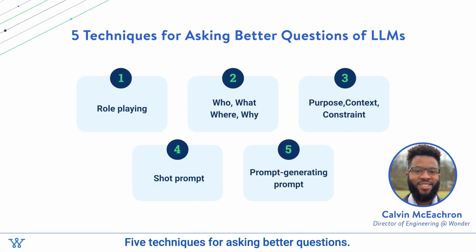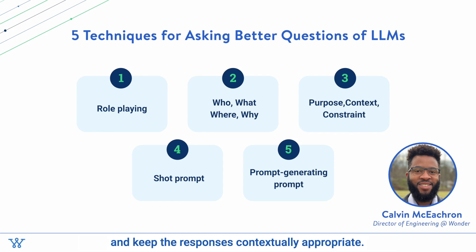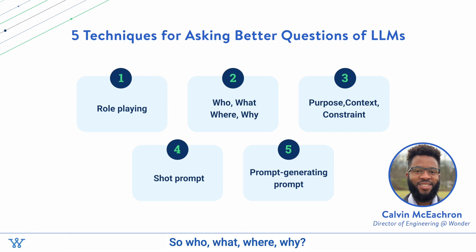Five techniques for asking better questions. The first one is my favorite: role playing. I use role playing in most, if not all, of my prompts. Using role playing can create a more interactive conversation and keep the responses contextually appropriate. By asking the AI to assume a role, you make sure that it focuses on the perspective you want to bring to the conversation.